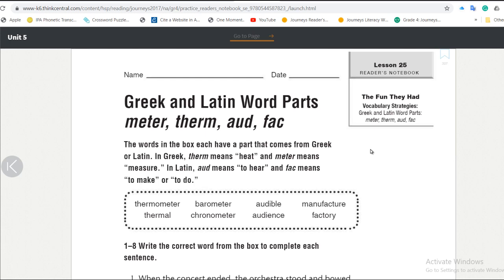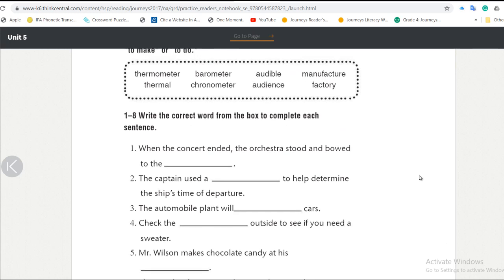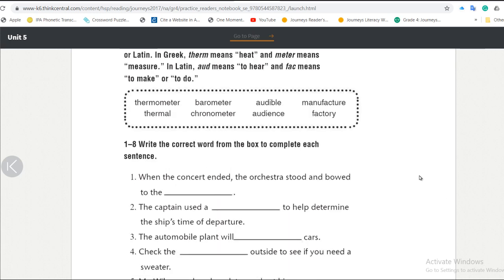We have here some words that we're gonna use in the eight sentences below. The words are as follow: thermometer, barometer, audible, manufacture, thermal, chronometer, audience, factory.